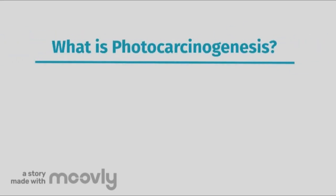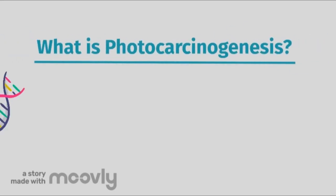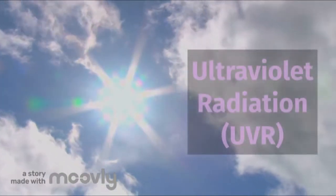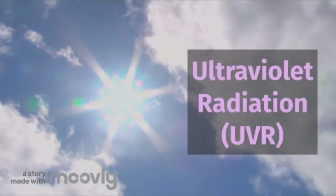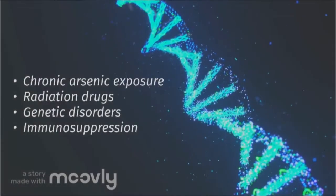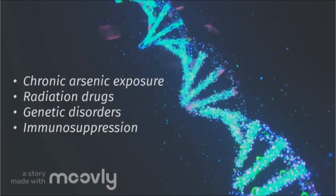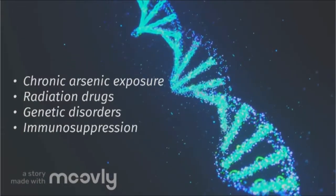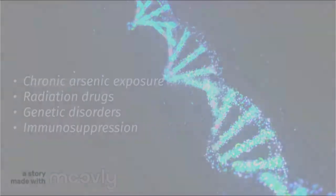Skin cancer is formed through a process called photocarcinogenesis, which is the sum of complex biochemical events that lead to the occurrence of the cancer. This occurs mainly due to the repeated exposure to ultraviolet radiation, also known as UVR. Some other risk factors contributing to skin cancer include chronic arsenic exposure, radiation drugs, and certain genetic disorders or immunosuppression.